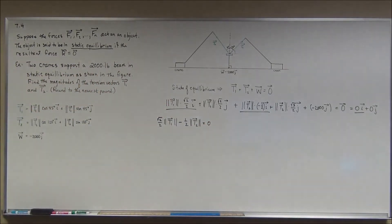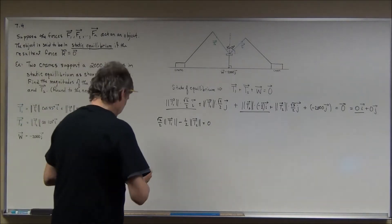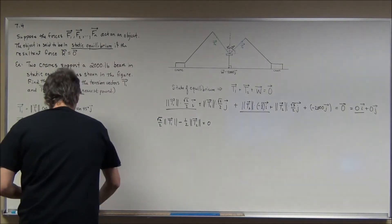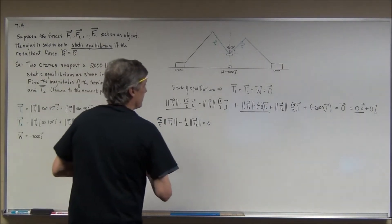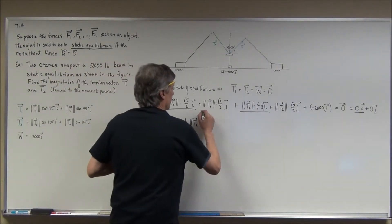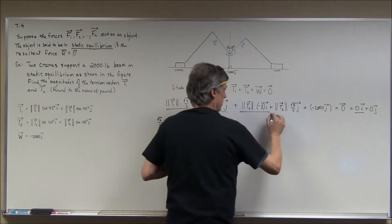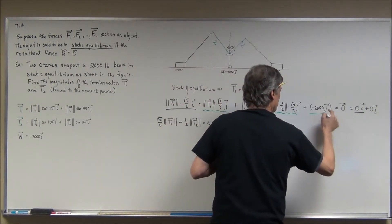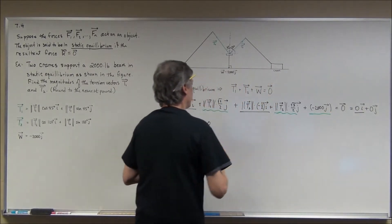So far so good. What I'm going to try to do is come up with a system of equations. For my second equation I'm going to use a different color pen. I'm going to take these terms — see how they're all in terms of vector j.